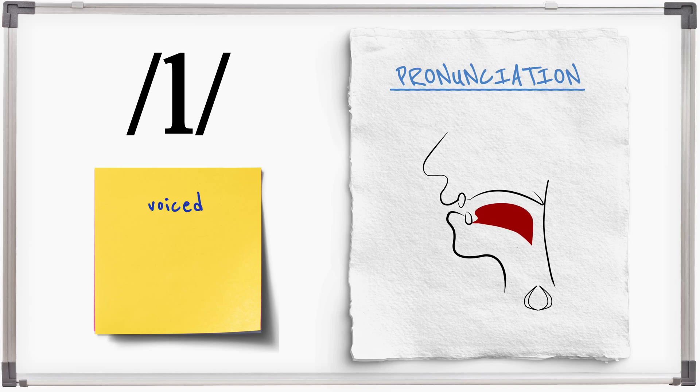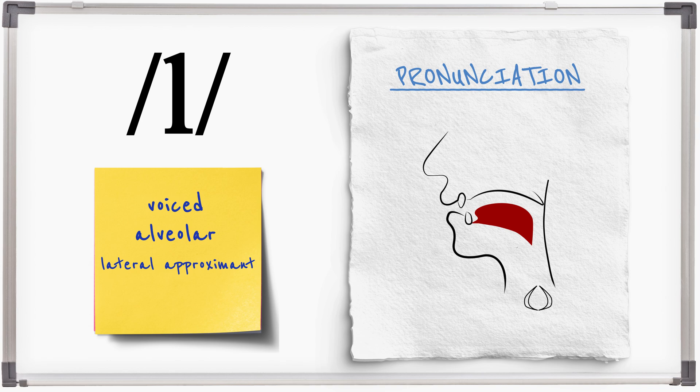L is a voiced, alveolar, lateral approximant, made by raising the tongue to the alveolar ridge and blocking the flow of air with the central part of the tongue.